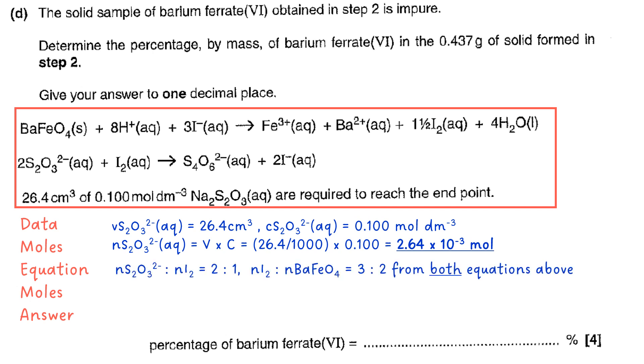Now there's quite a tricky part to this because we need to get the ratio between thiosulfate and barium ferrate(VI). But they're in different equations. The thing that's connecting them is the iodine. So the iodine reacts with S2O3^2- but it also is a product in the first equation. So what you need to do is quickly work from S2O3^2- via iodine then back to barium ferrate(VI). So doing that allows us to come up with a 3 to 1 ratio.